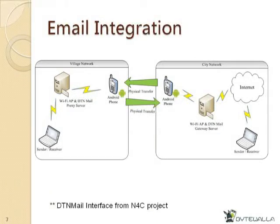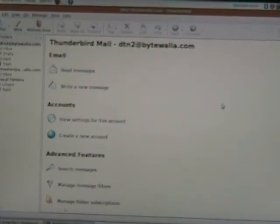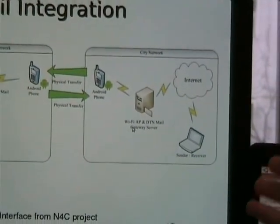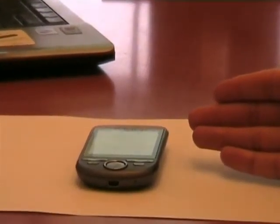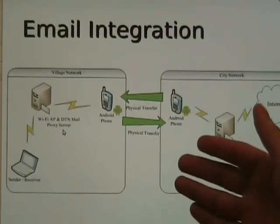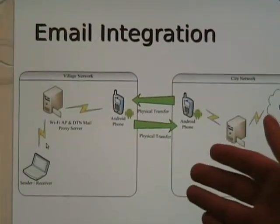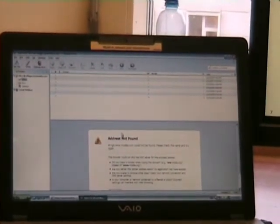Let's now begin the email integration demonstration. Our network configuration has a city network and a village network. In the city network, we have a sender laptop installed with our email client that will send email to the DTN mail gateway server. The Android phone will come to the network to pick up the email, and when it goes to the village, it will transmit to the DTN mail proxy server. Once the DTN mail proxy server receives the email, the recipient in the village will connect to retrieve it.